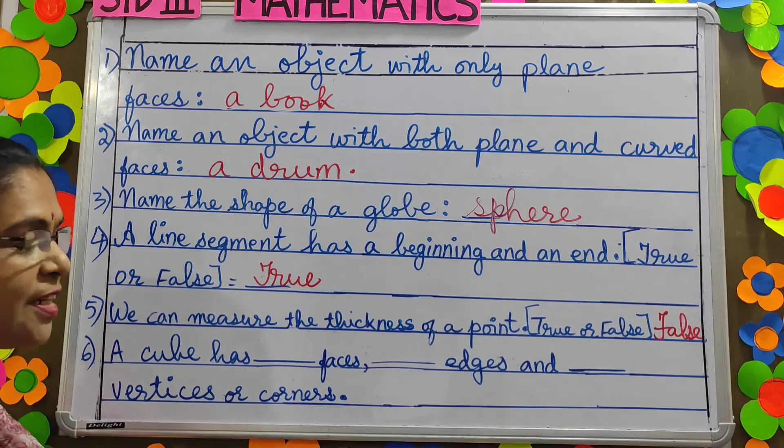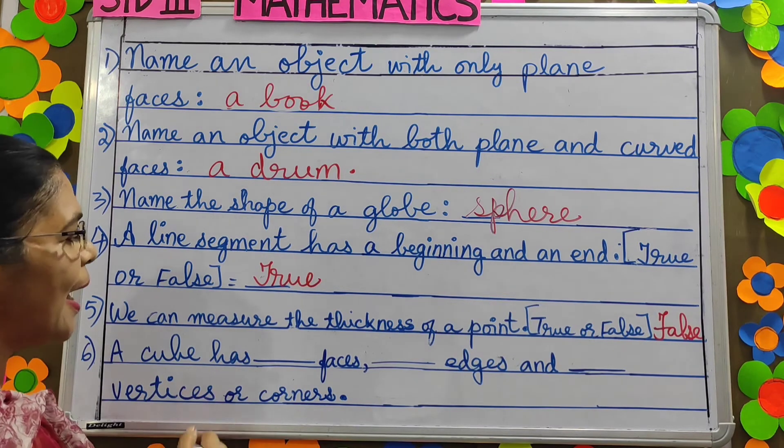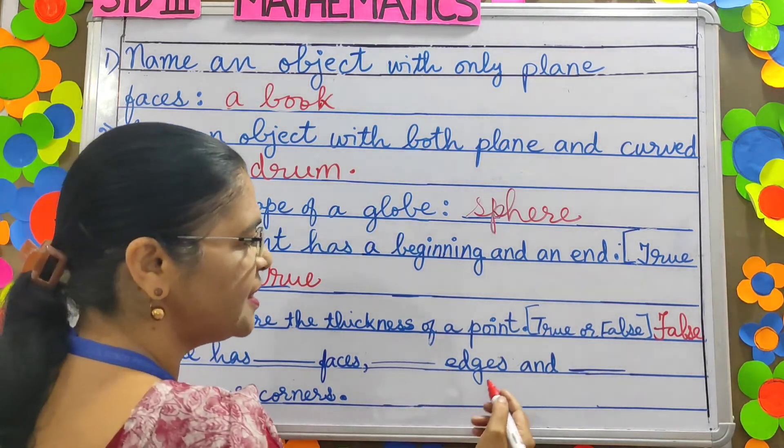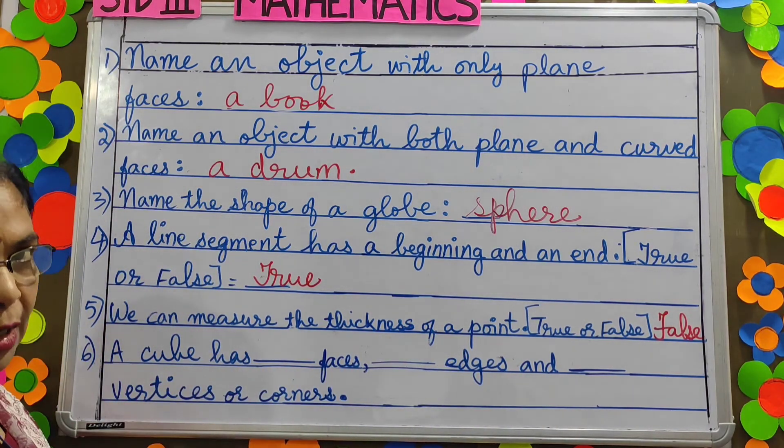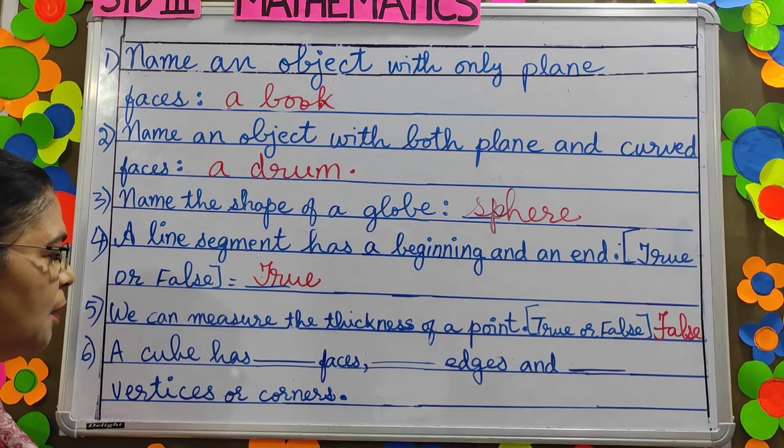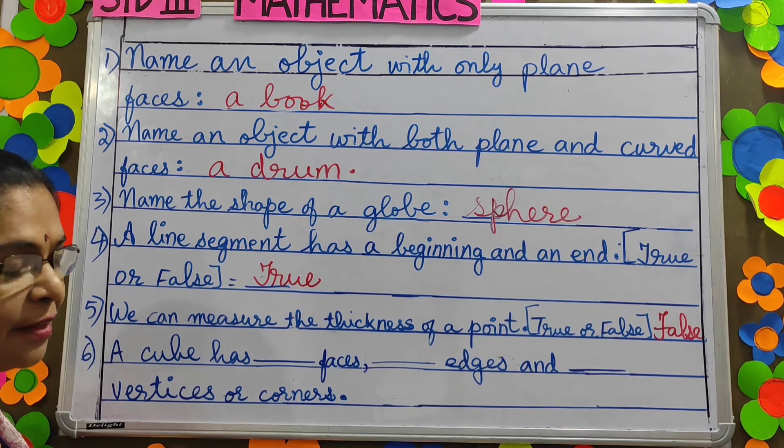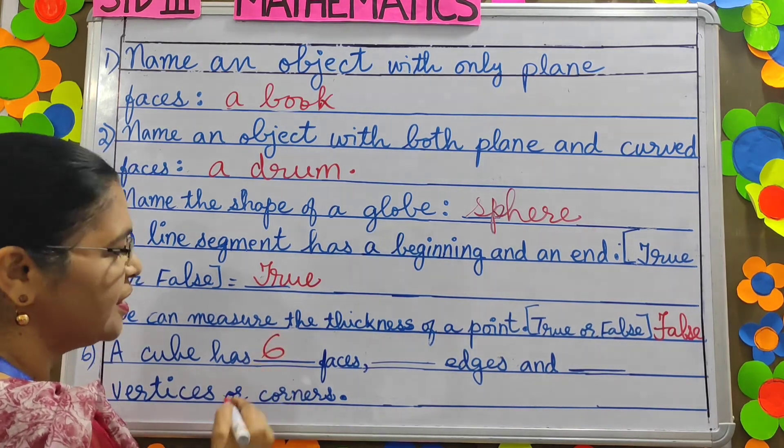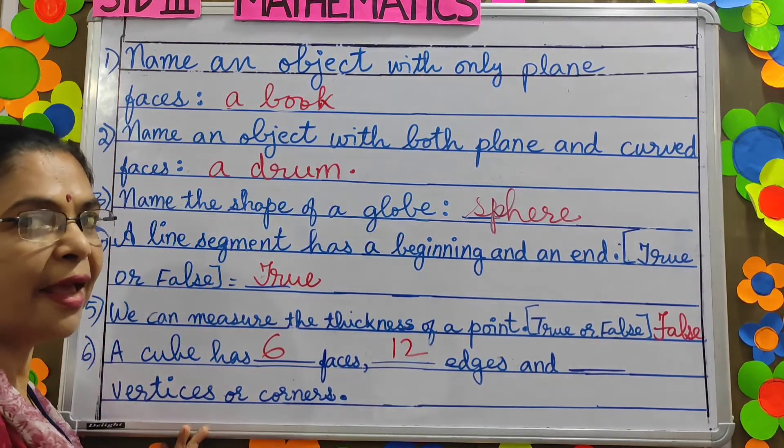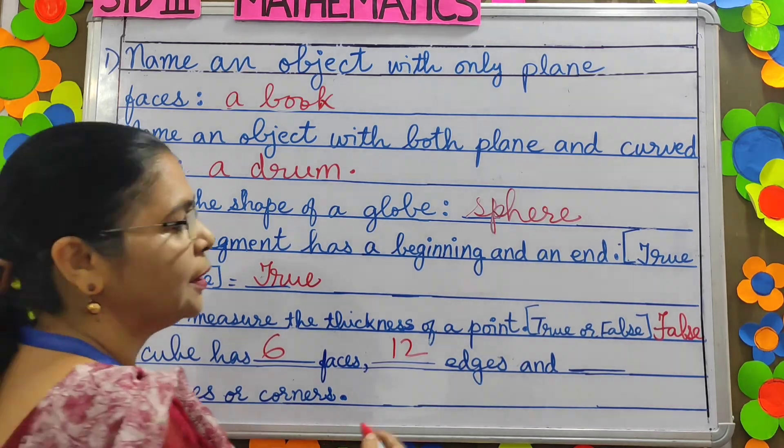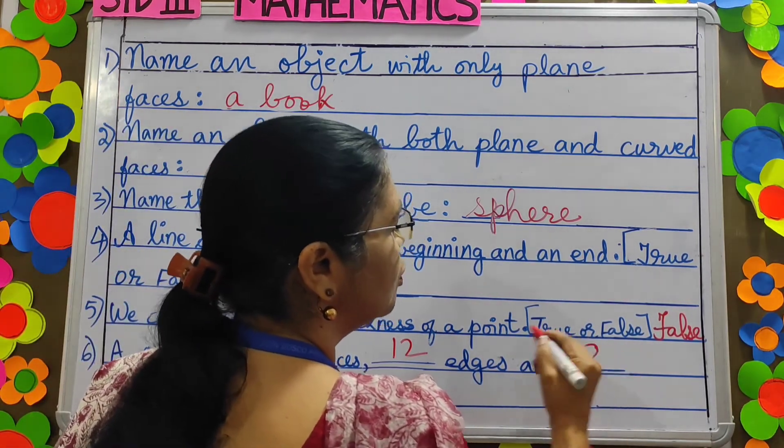The last one children. A cube has dash faces, dash edges and dash vertices or corners. A cube has how many faces children? Six faces. How many edges? Twelve edges and how many corners? Eight corners.